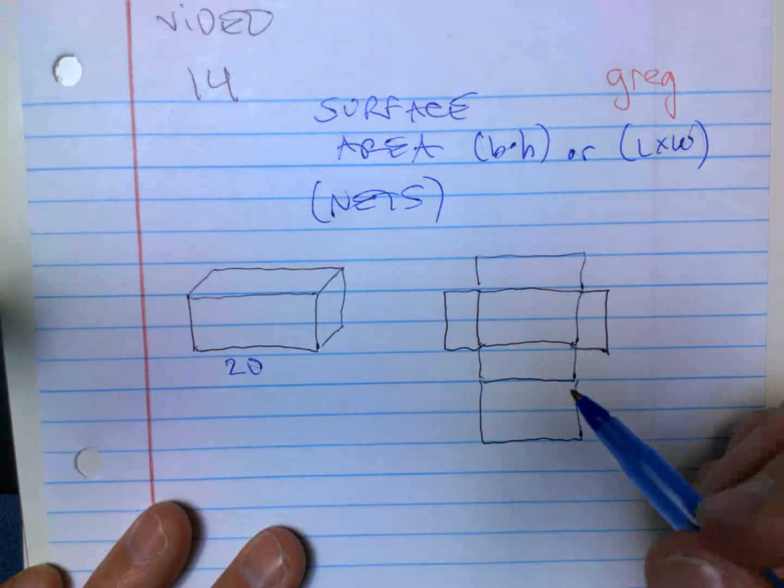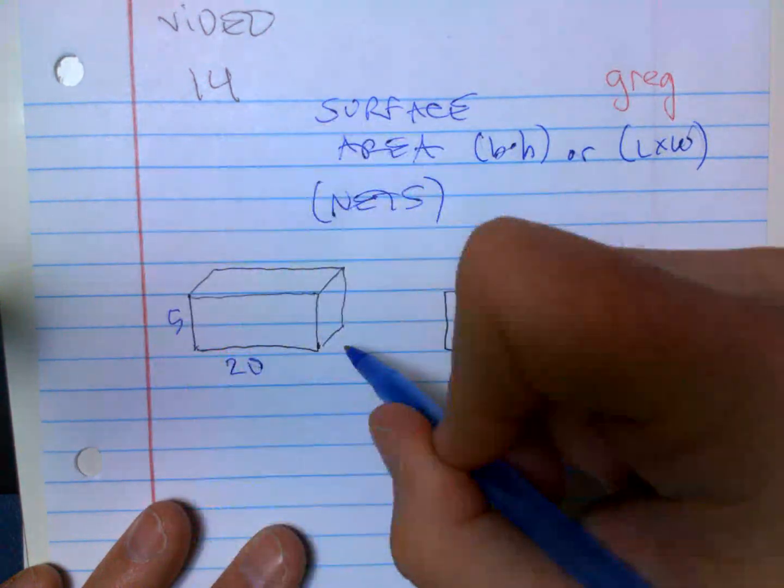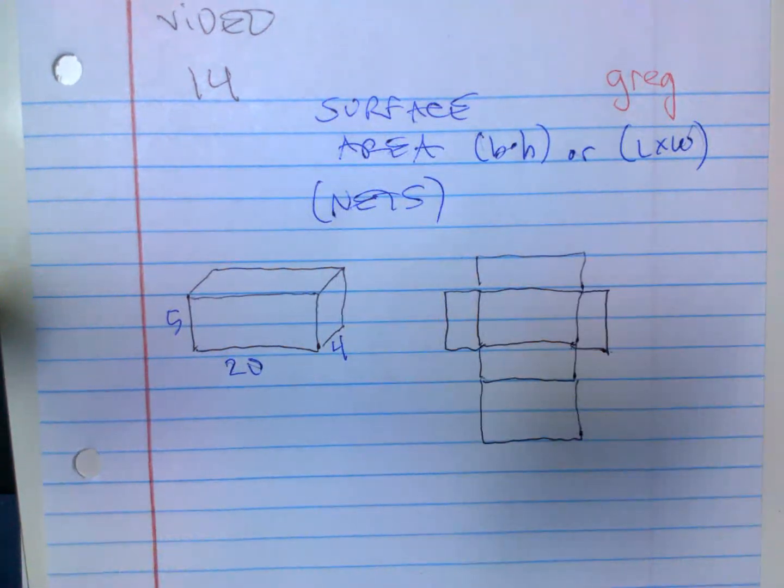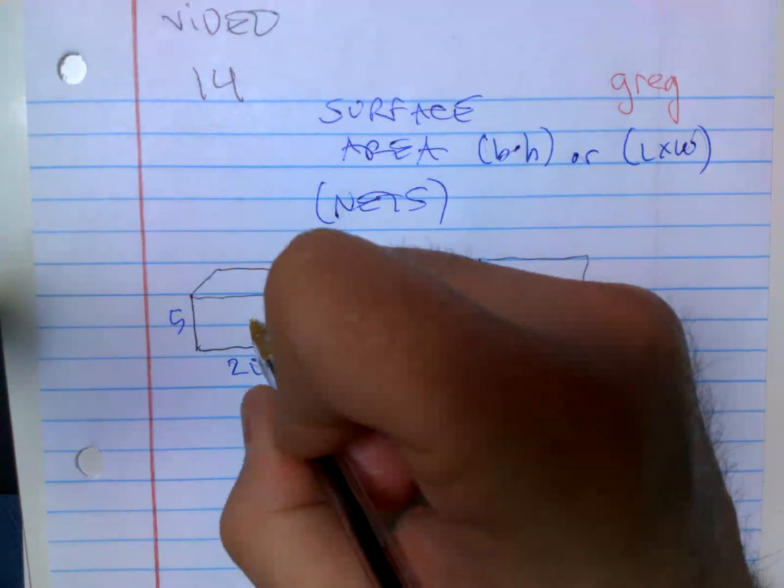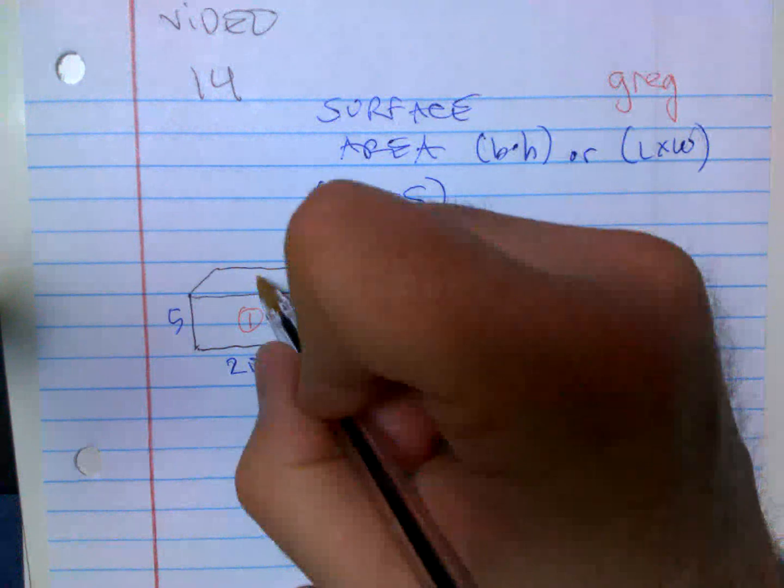If that's 20, let's call this - I'm just going to call it 5 and 4. I see half of the shape right now. I see the front but I don't see the back. I see the top.